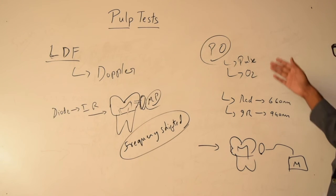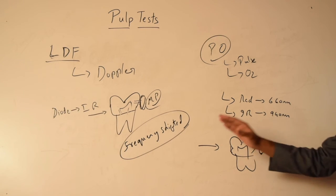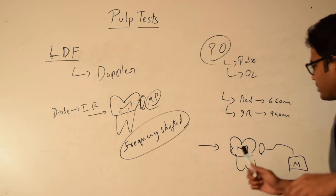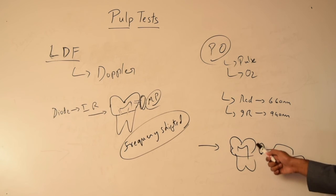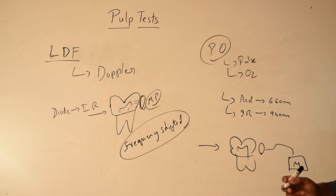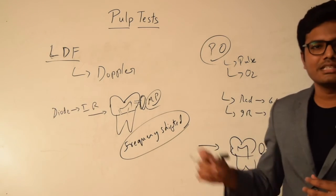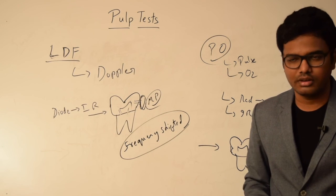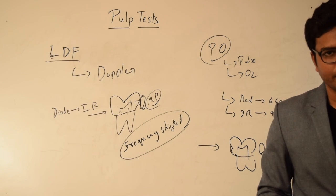Pulse oximetry uses two lights: red light at 660 nanometers and infrared at 940 nanometers, incident onto the tooth. Depending upon the ratio of oxygenated hemoglobin to deoxygenated hemoglobin within the microvasculature, a particular amount of red and infrared light is absorbed by the tissue and the rest is reflected back. The sensor detects the reflected light and provides pulse rate and oxygen concentration accordingly. The single greatest advantage of these techniques is that even in cases of recent trauma, we can evaluate the status of the pulp, unlike electrical pulp testing or cold testing.